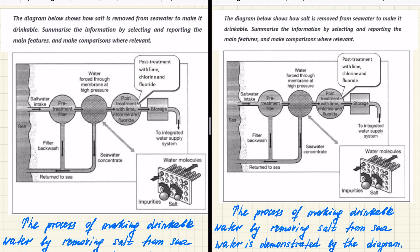And we're gonna start with introduction part where I explained in my previous lessons that you're gonna reword your first sentence, which is this one. So we say the process of making drinkable water by removing salt from sea water is demonstrated by the diagram. Basically, we're rewording first sentence. And then we go with body paragraph one, where we're describing our first process, which is treatment and deleting of these salts and backwashing them back to the sea. So let's start with body paragraph one.